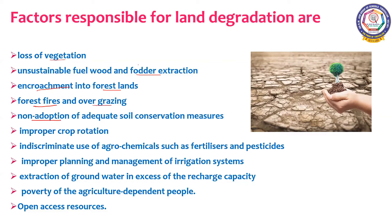Non-adoption of adequate soil conservation measures is a factor, as farmers do not have knowledge about soil conservation. Improper crop rotation is another factor — farmers do not make proper selection of crops, and the new crop planted should not deplete the same nutrients that the earlier crop had taken. Indiscriminate use of agrochemicals such as fertilizers and pesticides is also responsible for land degradation. Instead, farmers can use manures and bio-pesticides.